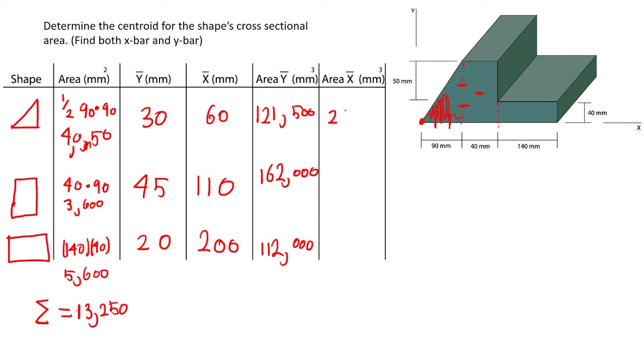And then we do the same for the x-bar. So it's going to be 243,000, 396,000. And they're big numbers most of the time because typically they're millimeters or another small unit. And then we have 1,120,000 for the last one.